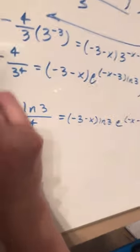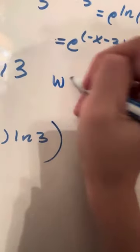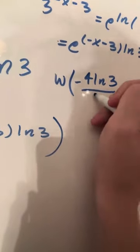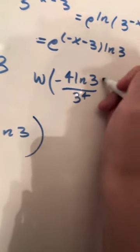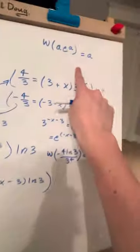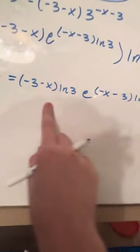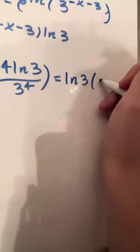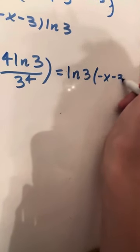That's right — take the W of it. So I'm just going to state: W of (negative 4 ln 3 over 3 to the power of 4) is equal to — and remember, based on our rule, this will give us the exponent a. So we're going to have ln 3 times (negative x minus 3).